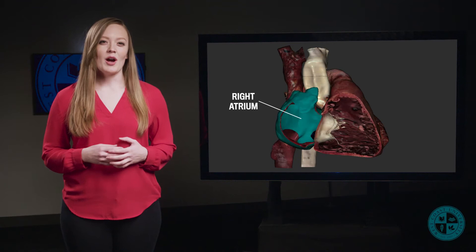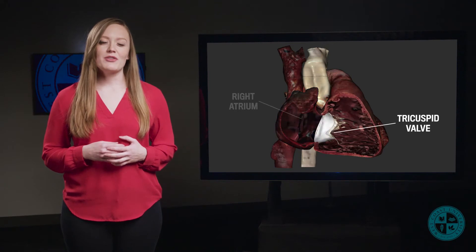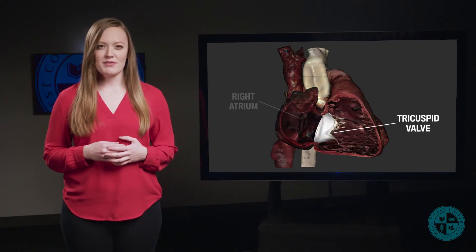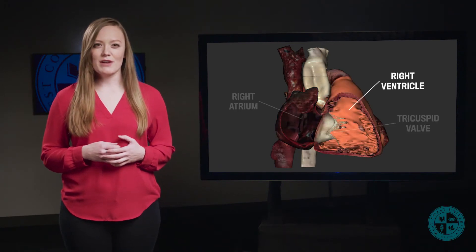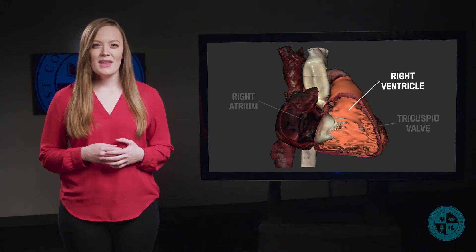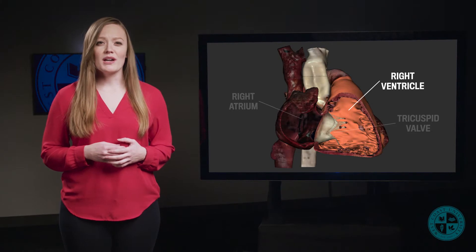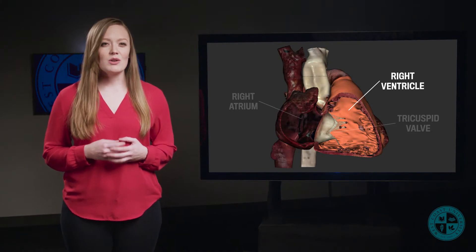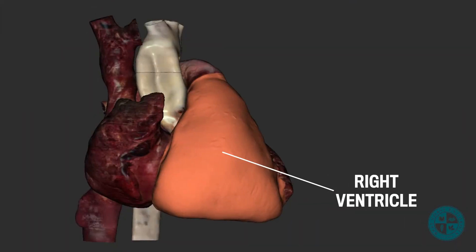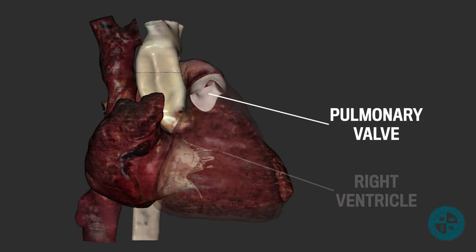From the right atrium, our blood drop will travel through the tricuspid valve and into the right ventricle. This blood drop is oxygen poor, so we know our goal is to get to the lungs. From the right ventricle, the myocardium will contract and eject us out through the pulmonary valve into the pulmonary trunk.